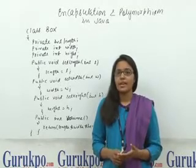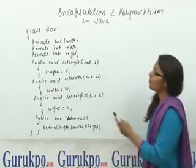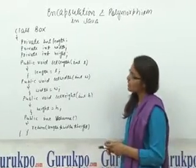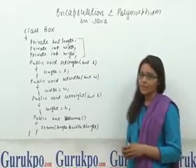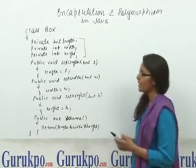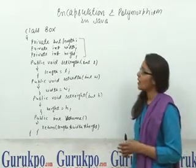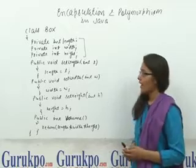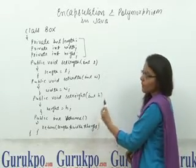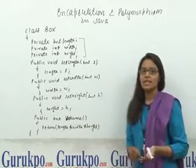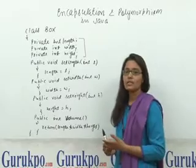Let us understand with an example how we achieve Encapsulation. Here, we have declared a class box and these are the data members of a class, and we have declared them as private. The security is maintained here because the data are private — we cannot alter the data. And the methods of this class are public, meaning we can access the functionality of the functions but we cannot alter the data.